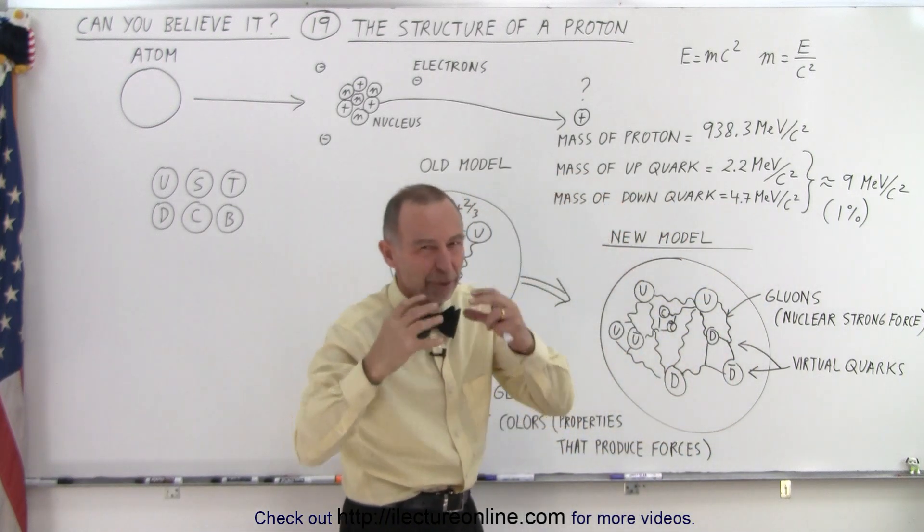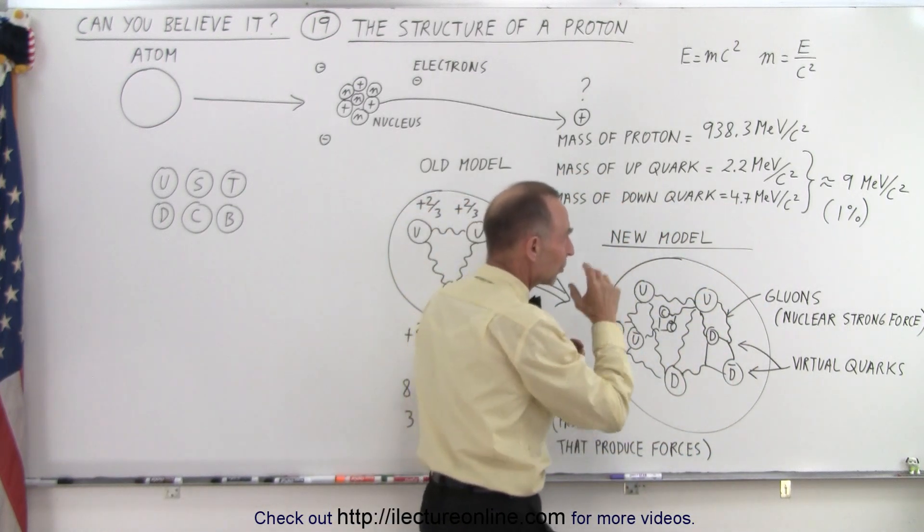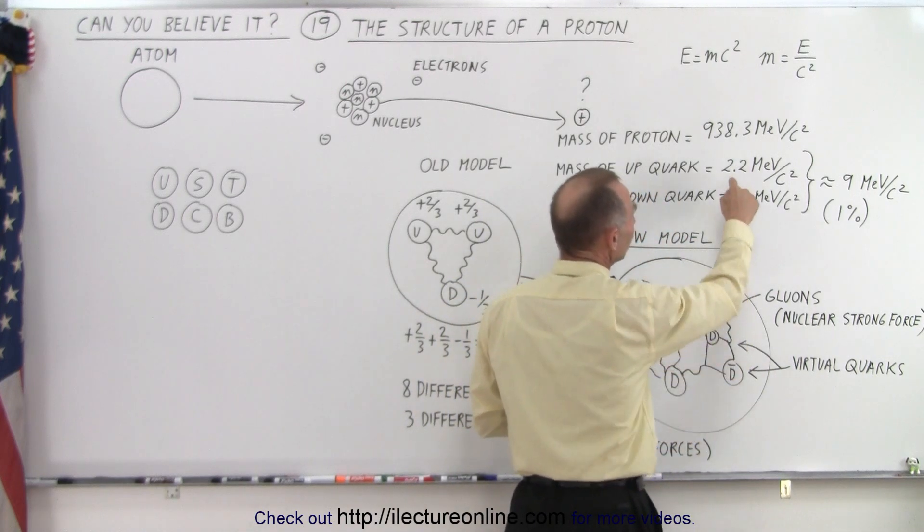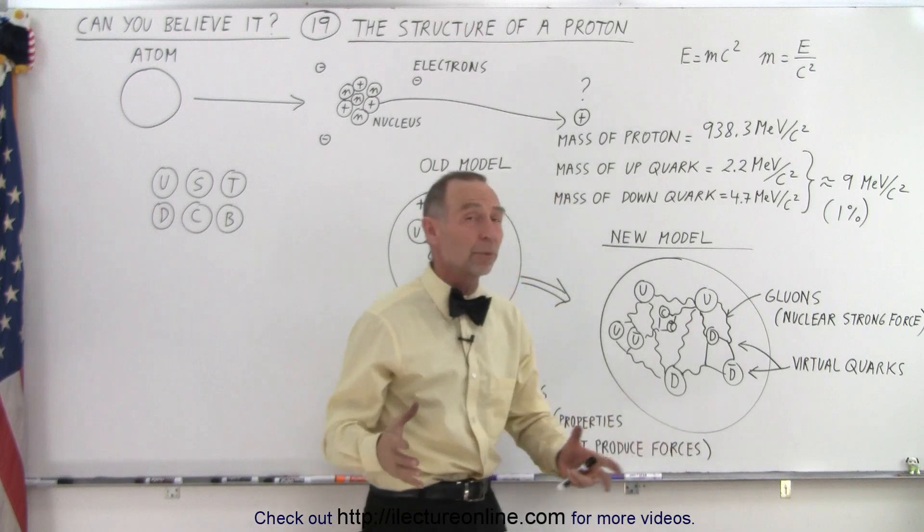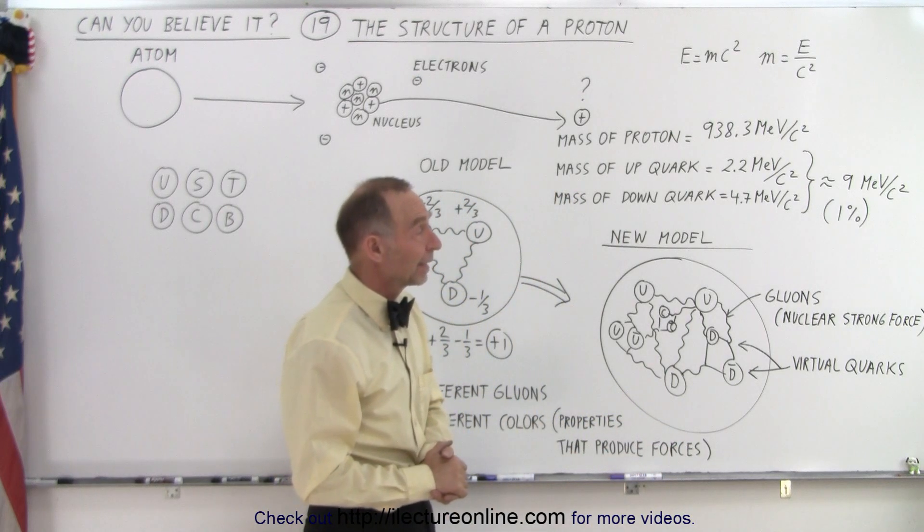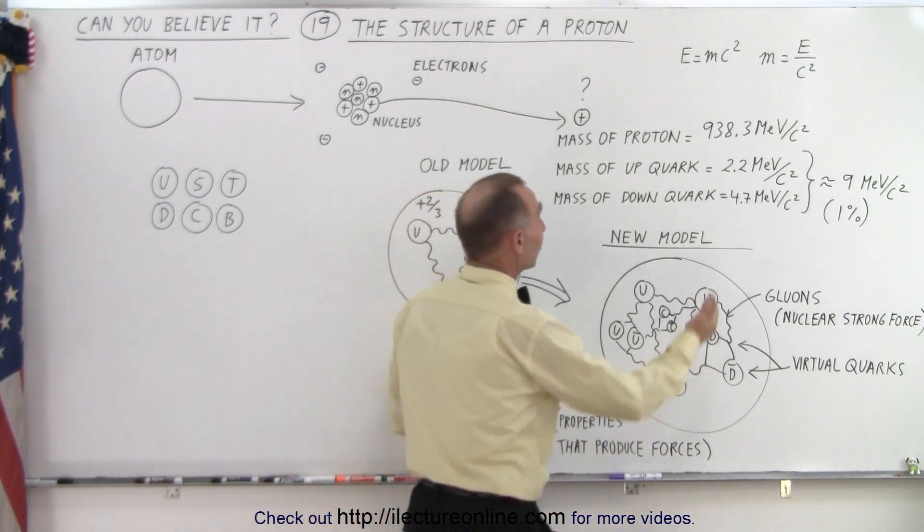So 2 of these plus 1 of these adds up to about 9 million electron volts per C squared. That's only 1% of the total mass of a proton.